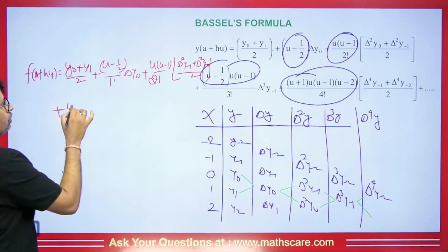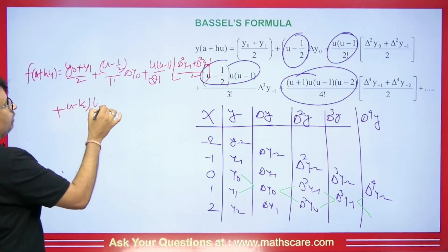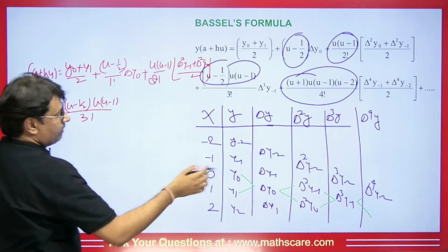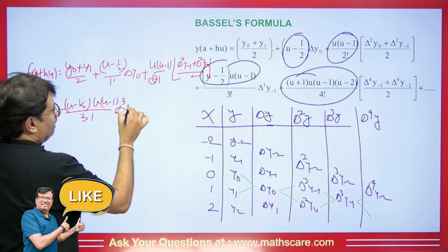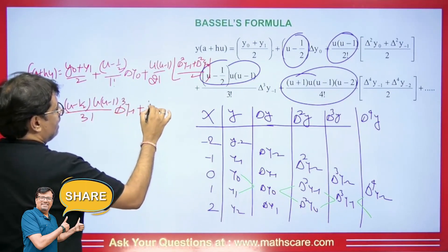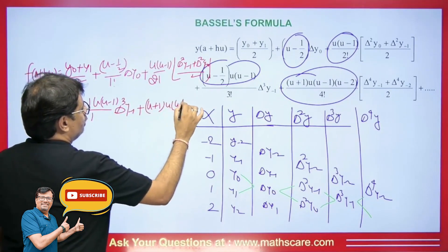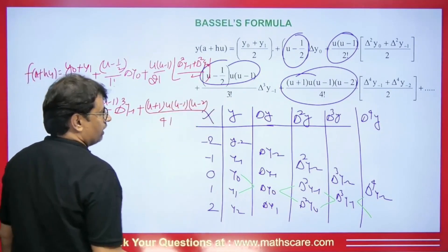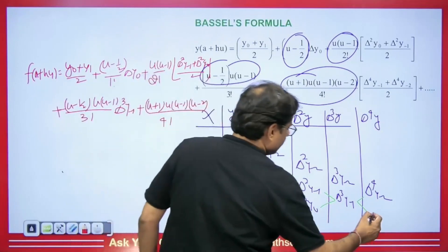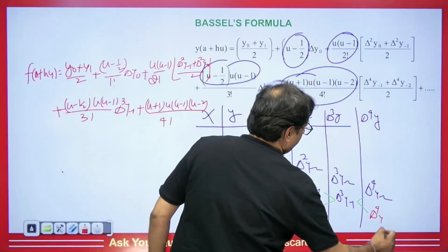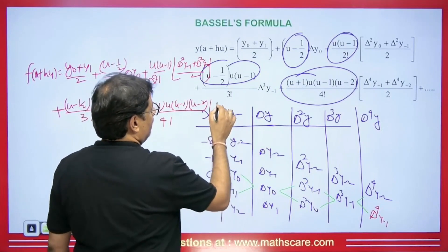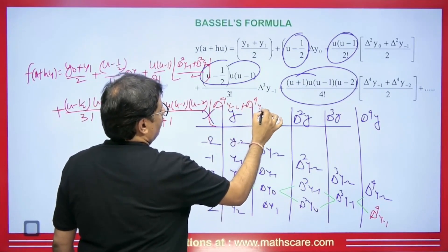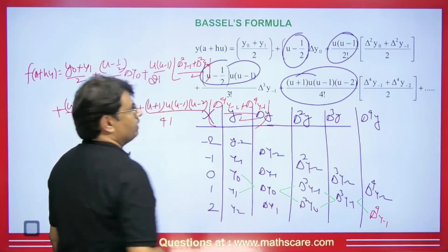Then we add the next term: (U minus 1/2) times U times (U minus 1) upon 3 factorial, multiplied by del cubed Y minus 1. Then the next term has (U+1)(U)(U minus 1)(U minus 2) upon 4 factorial, and here we take the average of del⁴Y minus 2 plus del⁴Y minus 1 divided by 2. This completes the Bessel formula.